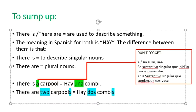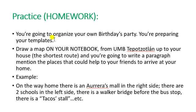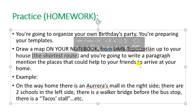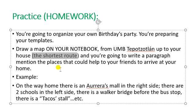As practice, you are going to organize your own birthday party. You are going to prepare your invitations and draw a map on your notebook from the UMB of Potatlan to your house, using the shortest route. Then you are going to write a paragraph mentioning the places that could help your friends arrive at your home. For example: 'On the way home, there is a pharmacy on the right side; there are two schools on the left side; there is a pedestrian bridge before a bus stop; there is a taco stall,' etc.